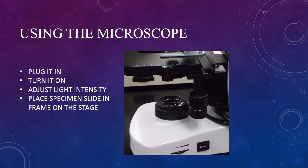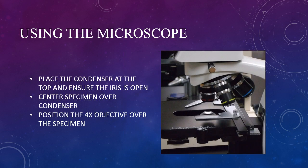Turn it on and adjust the light intensity to 50–60%. Too much light is hard on your eyes and can damage the specimen. Place the specimen in the frame on the stage. Bring the condenser to the top; it should be just underneath the slide.